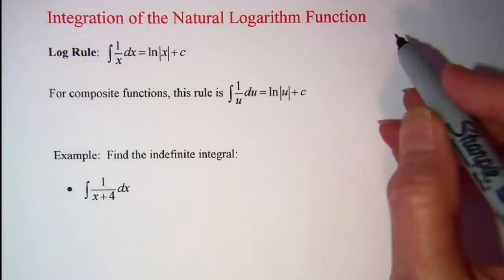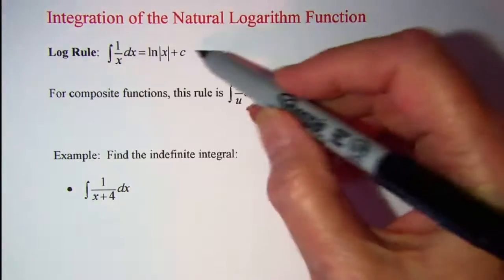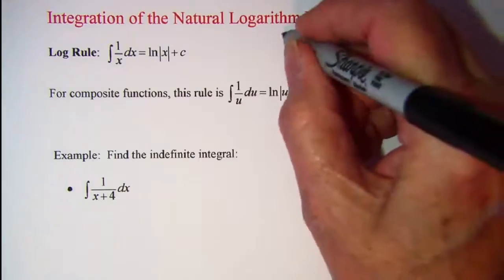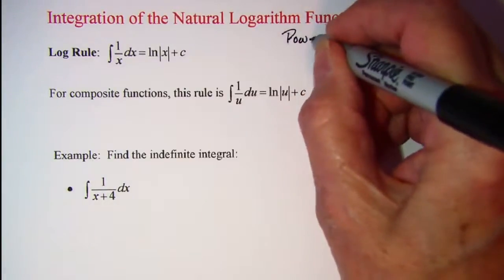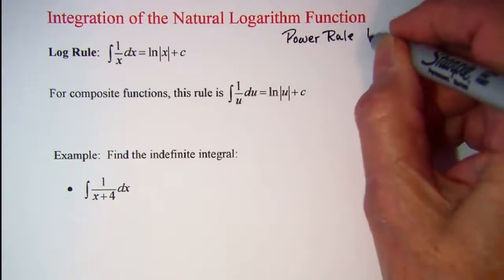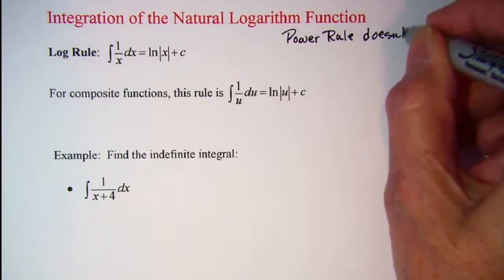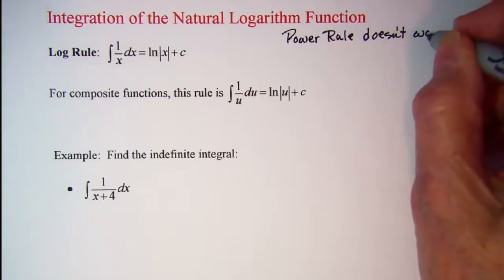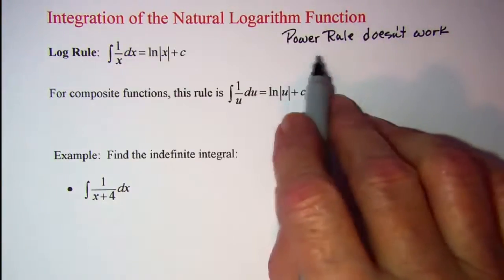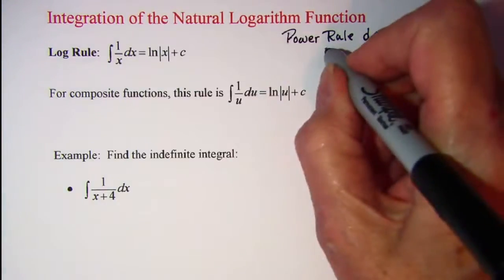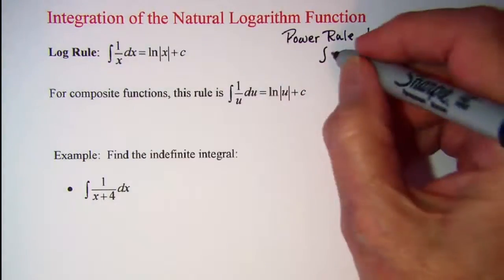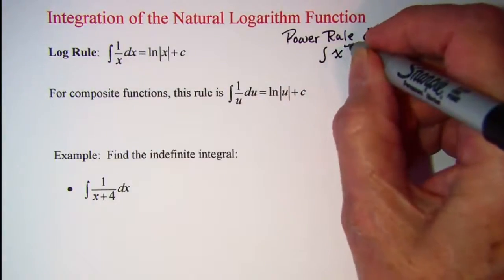Now, just a note: this is used if we tried to use the power rule, and the power rule doesn't work. But if we tried to use that and instead of writing 1 over x, we wrote x to the negative 1 dx.